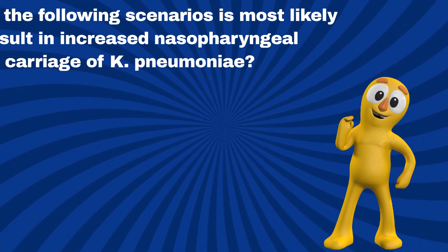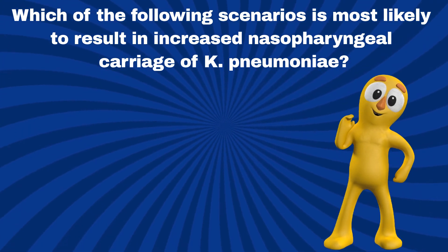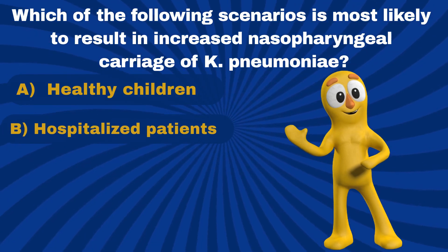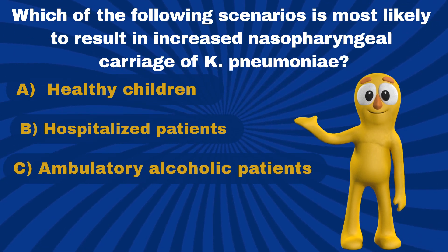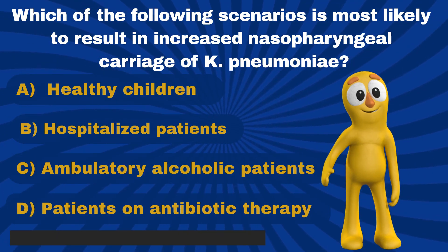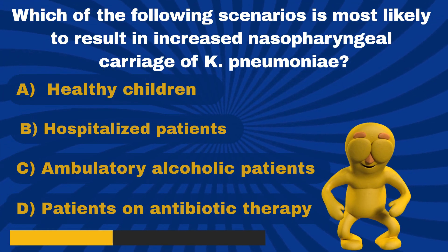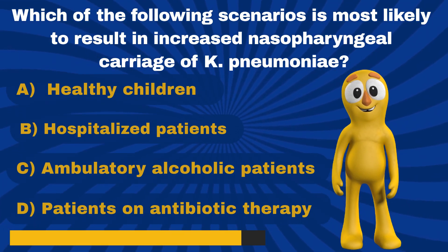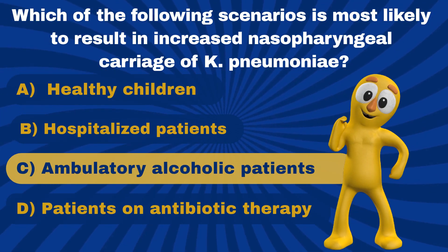Question 6. Which of the following scenarios is most likely to result in increased nasopharyngeal carriage of Klebsiella pneumoniae? Correct. It is C — Ambulatory alcoholic patients.